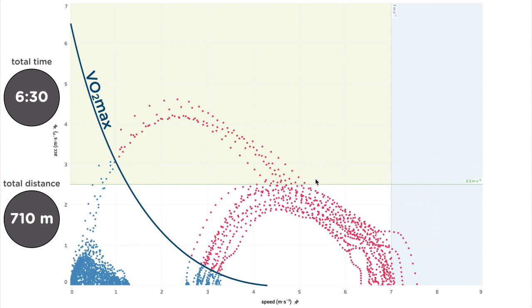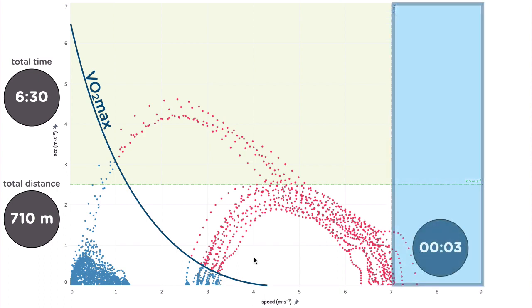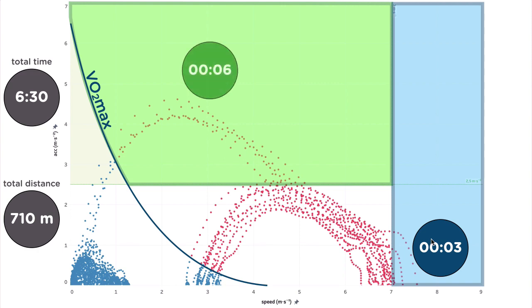So the red dots here are in the anaerobic area, while all the blue dots combinations are carried out by only the aerobic sources. What is interesting to observe is that the athlete spends only 3 seconds at high speed and 6 seconds at high acceleration.